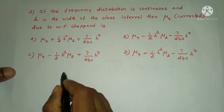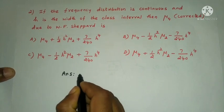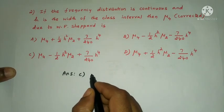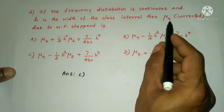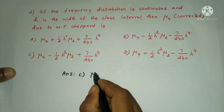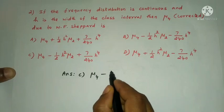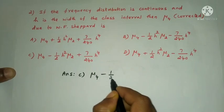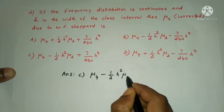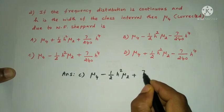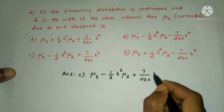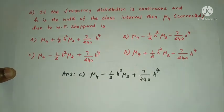The answer is option C. Sheppard's corrected mu4 value is: mu4 minus 1/2 H squared mu2 plus 7/240 H to the power 4.